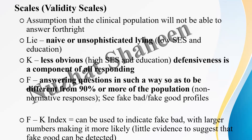The Lie scale tells us how much the test taker is attempting to distort their scores — for example, answering in ways that make society view them favorably. A high L score does not entirely invalidate the other scores; the rest of the profile can still be interpreted, but it indicates that the true values may be higher than reported.